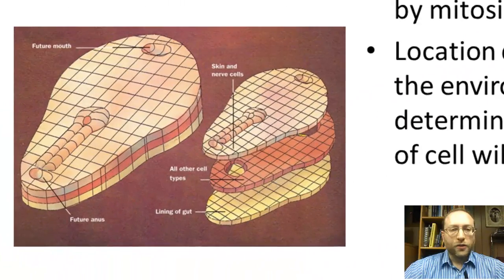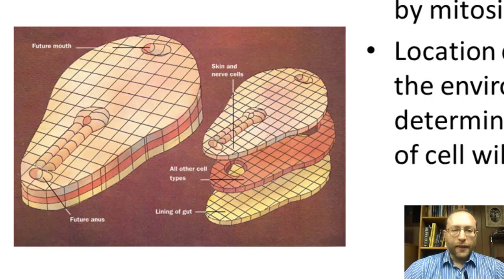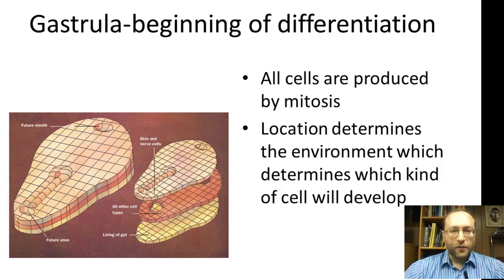The gastrula looks different from the models because at some point it flattens out. There are three layers: one layer becomes the skin and nerve cells (the outer part), the inner part becomes the lining of the gut, and the middle part becomes all the other types of cells. The thing to remember — and there are questions about this on the Regents exam — is that all these cells are produced by mitosis, so they're all genetically identical even though they look different. Every single cell in your body except gametes is produced by mitosis; sperm and egg are produced by meiosis.